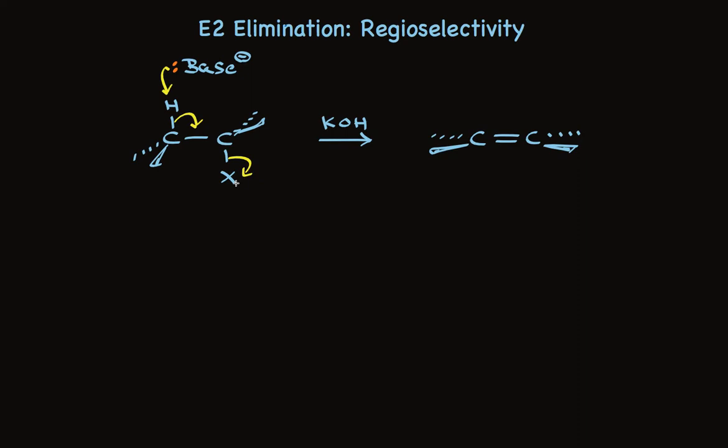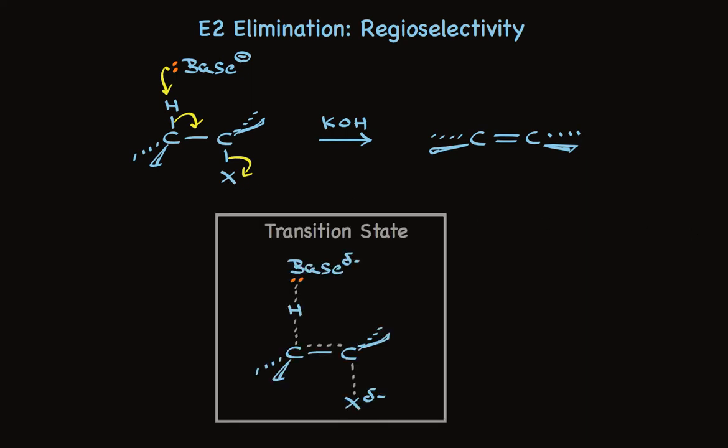This makes a simple picture that's easy to understand, but it's also helpful to look at the transition state. It's a very similar picture. We have base-proton bond making at the same time as we have proton-carbon bond breaking.